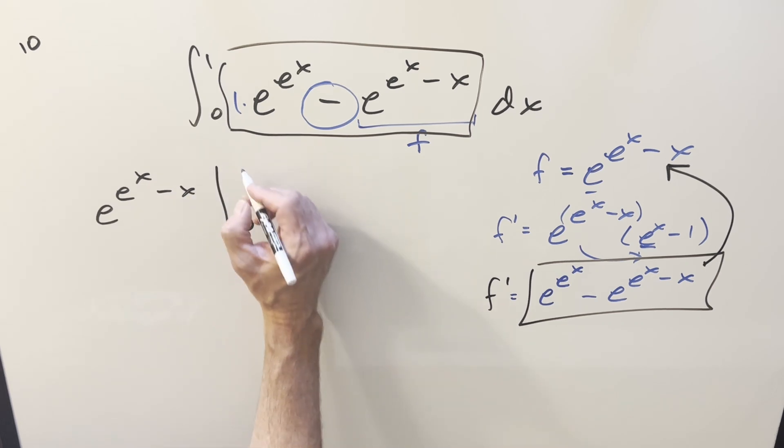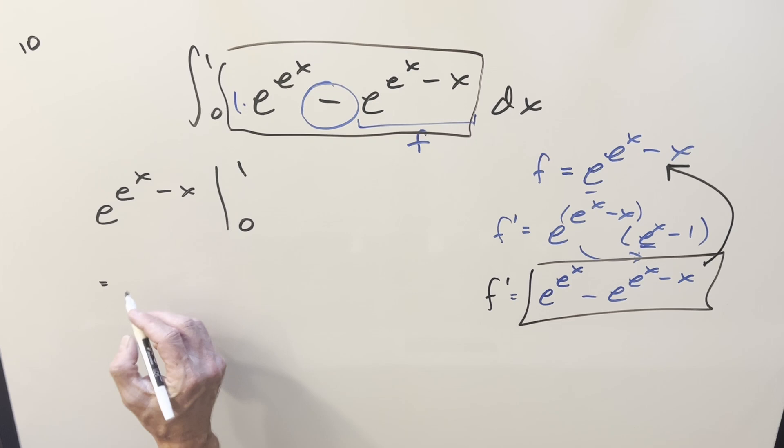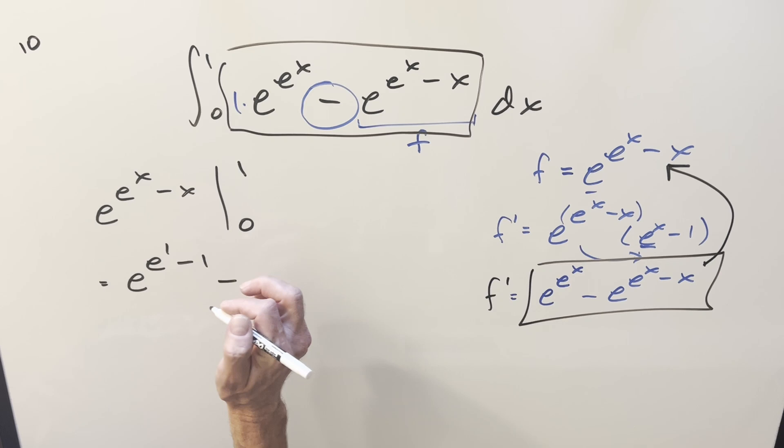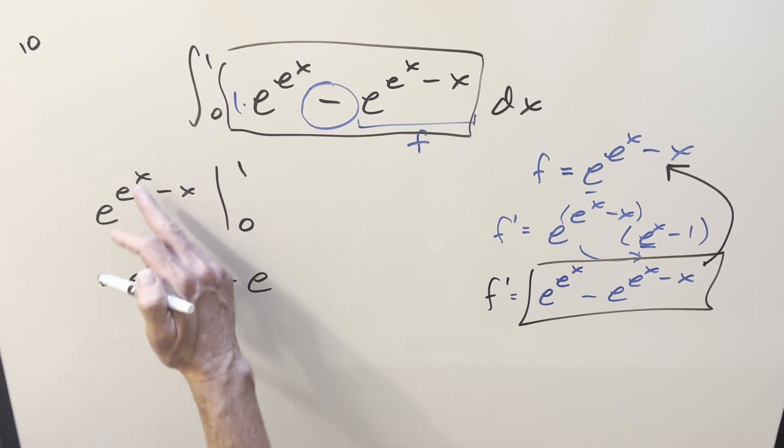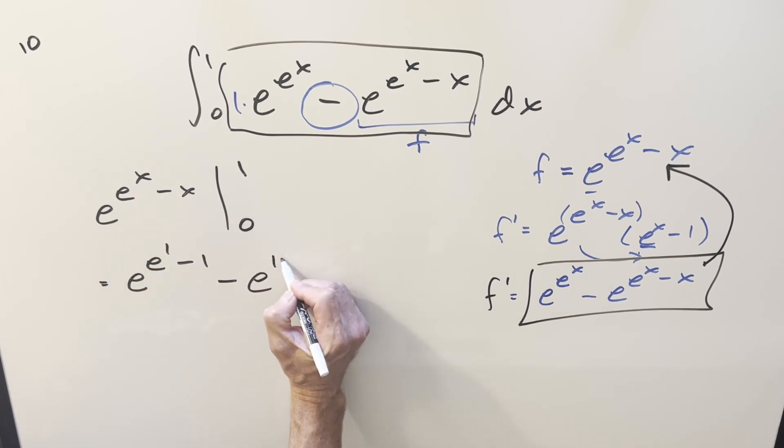So we can go backwards and say this integral is going to be e to the e to the x minus x evaluated from zero to one. Plug in, we'll do it carefully. First plug in a one, and we get e to the e to the one minus one. And then minus plug in a zero. E to the zero is one minus zero.